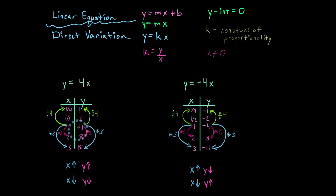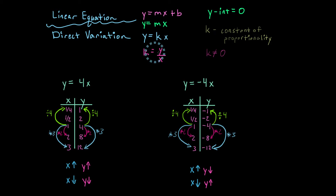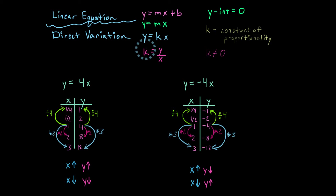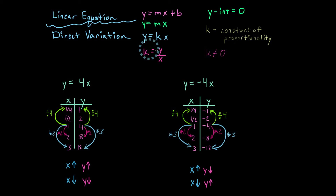So if you're trying to prove that your data set shows direct variation, and let's pretend you don't know what k is, you could use this setup and substitute points in for y and x to prove that you constantly get the same number. If k is consistent throughout, then you have direct variation. I'm going to take this setup: k equals y over x, and let's find out what k is equal to.